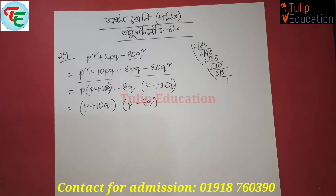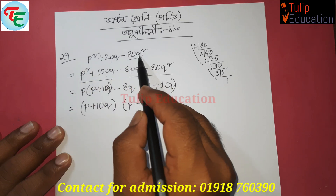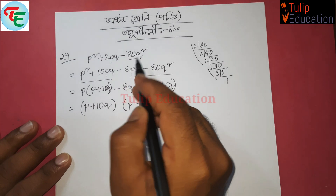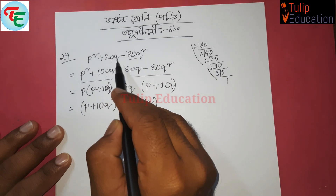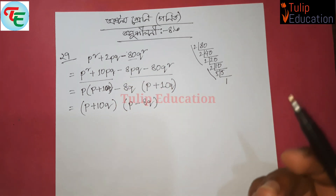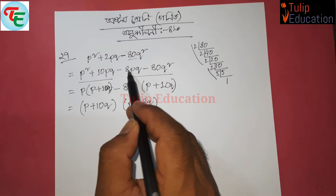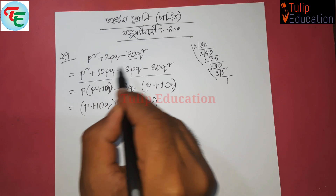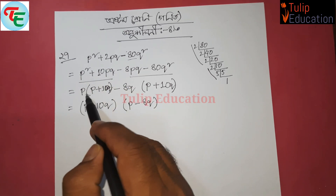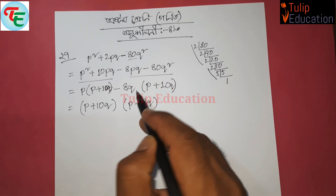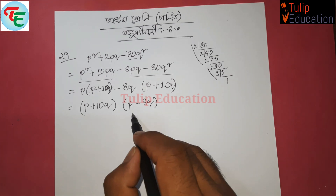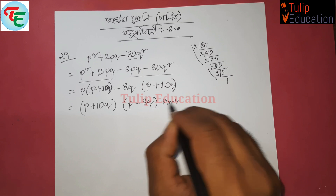Now we have our problem. At the same time, we have p plus 10q common. So we take p plus 10q common, and at the same time we also have p minus 8q. That is our final answer.